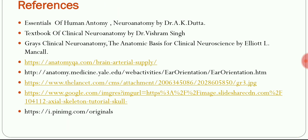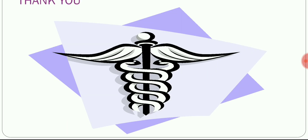This concludes part two on the vertebrobasilar system. Try to remember the five branches of the vertebral artery and their course, and the five branches of the basilar artery and their course. Thank you.